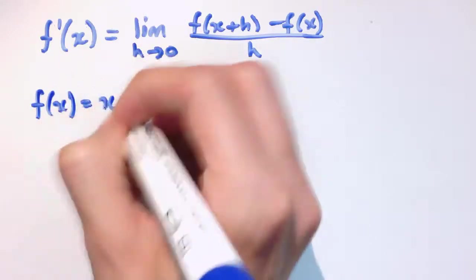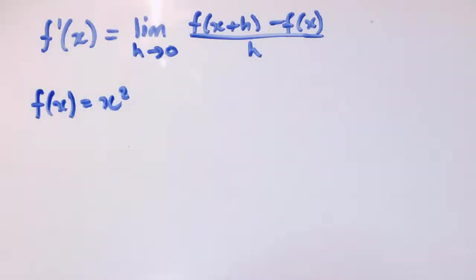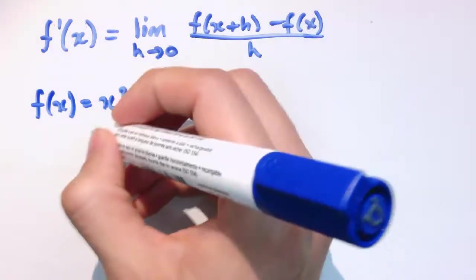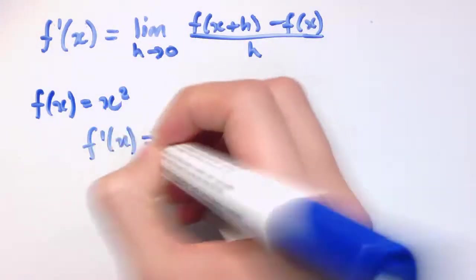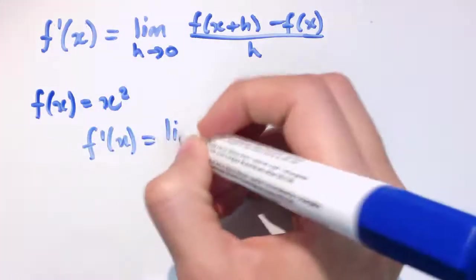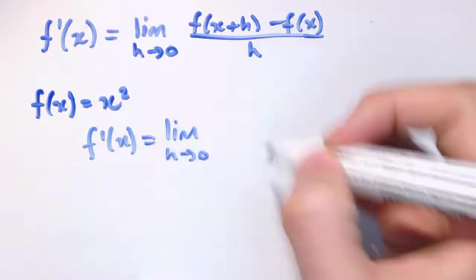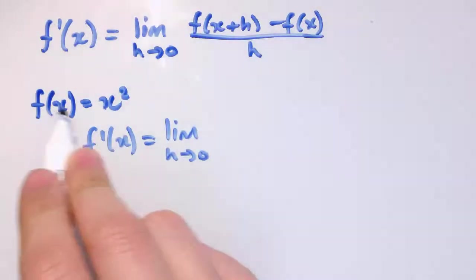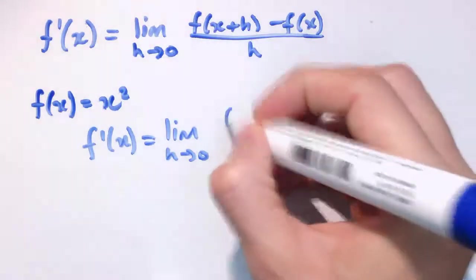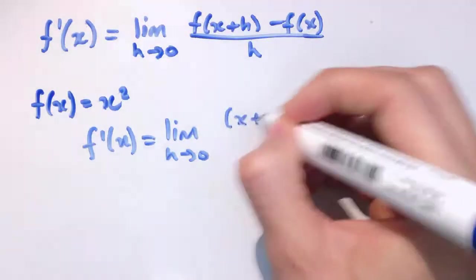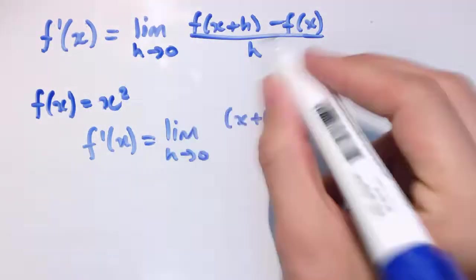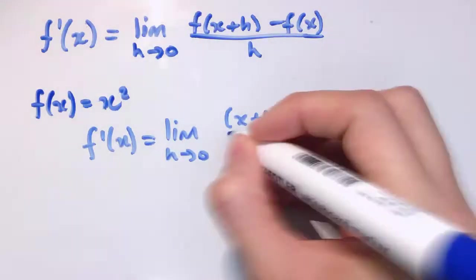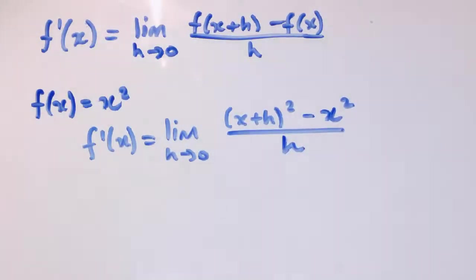We'll have f(x) = x². By this definition, f'(x) is going to be the limit as h tends to 0. Now f(x+h) means putting x+h into the function, so that's (x+h)² minus f(x), which is minus x², all divided by h.